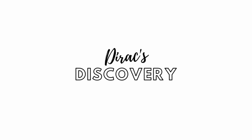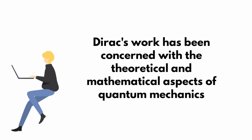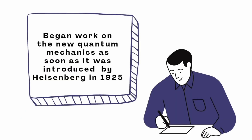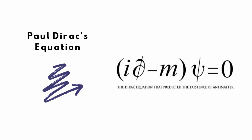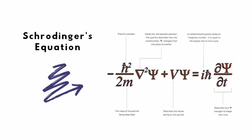Paul Dirac's discovery. Dirac's work was concerned with the mathematical and theoretical aspects of quantum mechanics. He began work on the new quantum mechanics as soon as it was introduced by Heisenberg in 1925. The importance of Dirac's work lies essentially in his famous wave equation, which introduced special relativity into Schrödinger's equation.